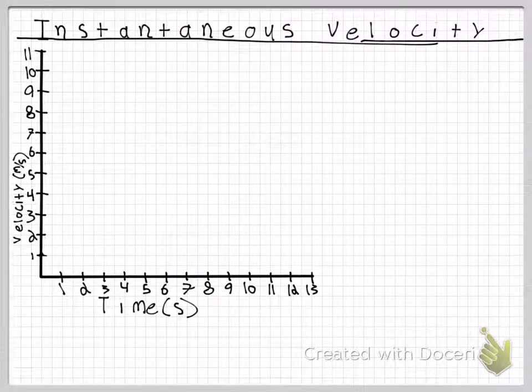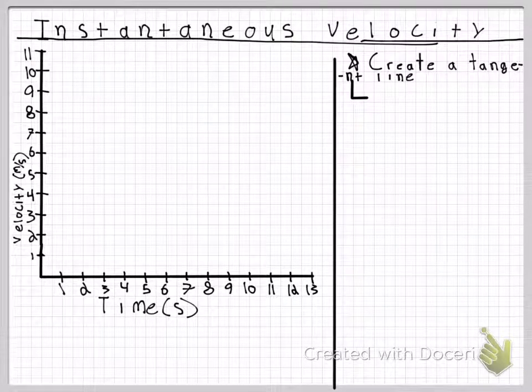Now for instantaneous velocity, again we have a graph with velocity on the y-axis and time on the x-axis. In order to find an instantaneous velocity, you need to create a tangent line.